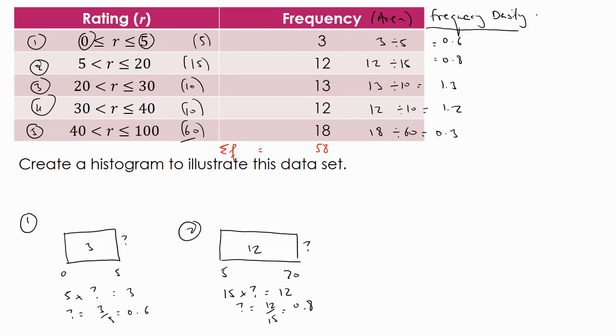So for the frequency density, we've got a quick shortcut here. Frequency density, basically, all I'm doing is the frequency divided by the width. See? This one, I did 3 by 5. This one, I did 12 by 15. Nice little shortcut here. See if you're drawing the bars out all the time.